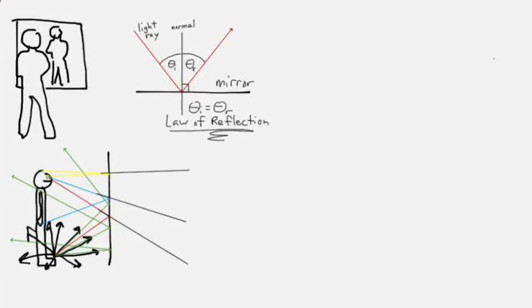The effect of this, if you repeated this for his entire body, would be there appears to be a man standing behind the mirror, as all the light seems to come from there. In fact, there's even symmetry with that image.